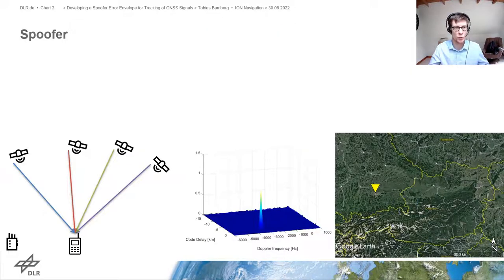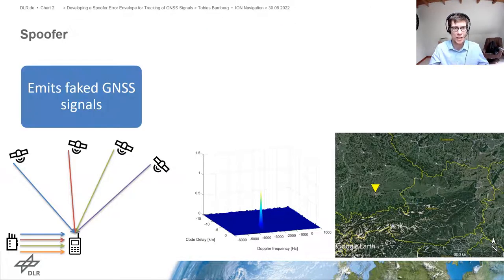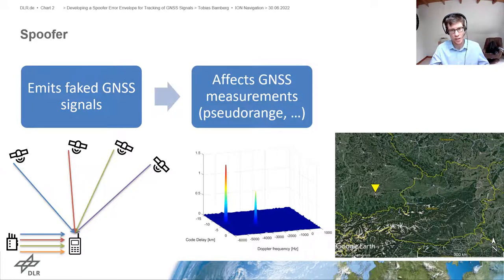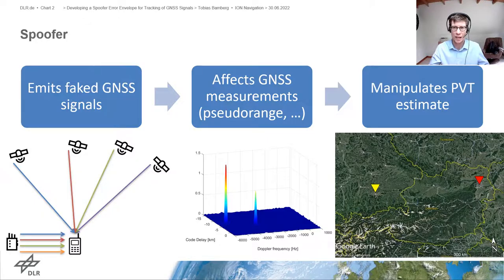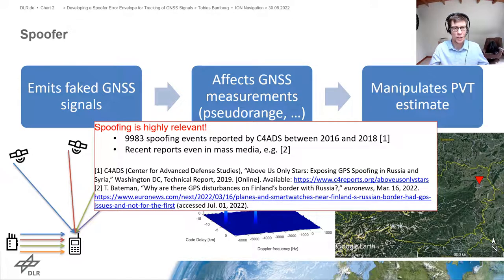What is a spoof? A spoof emits fake GNSS signals so that the receiver can no longer distinguish between the authentic and the spoofing signal, and as a result it calculates a manipulated PVT solution. Spoofing is not only a theoretical threat — it is highly relevant as recent reports have shown.